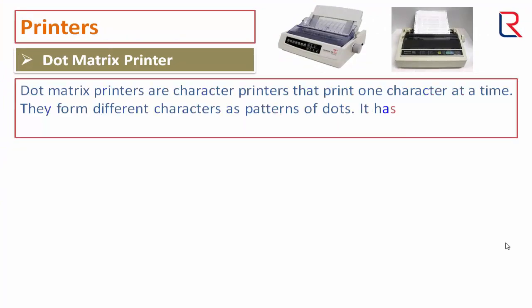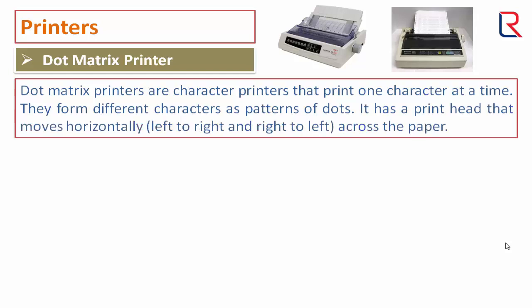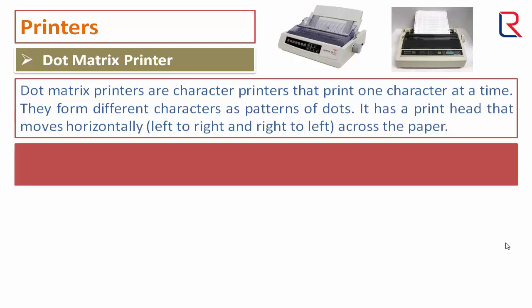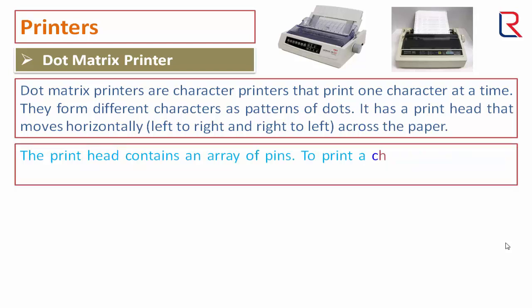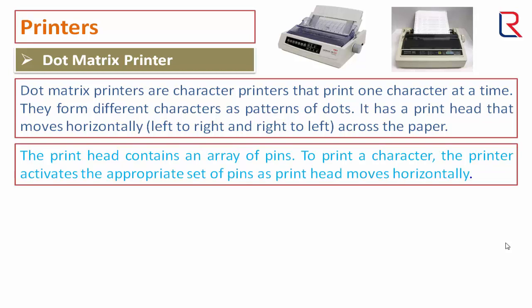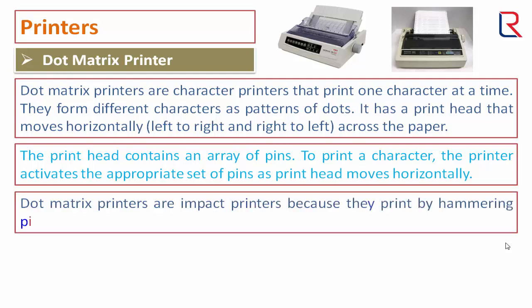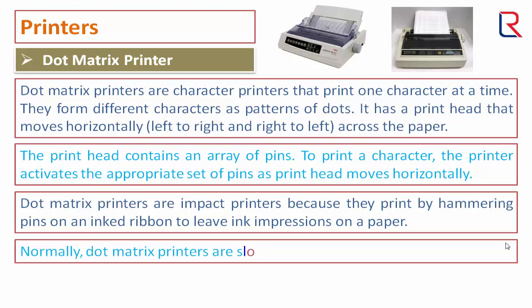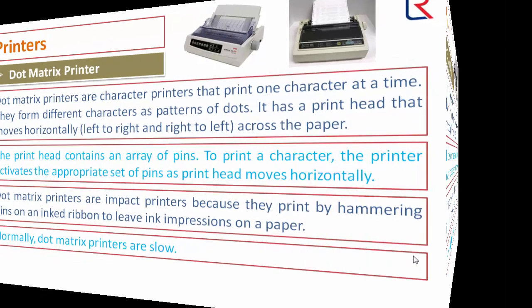Dot matrix printers are character printers that print one character at a time. They form different characters as patterns of dots. The print head moves horizontally across the paper and contains an array of pins. To print a character, the printer activates the appropriate set of pins as the print head moves horizontally. Dot matrix printers are impact printers because they print by hammering pins on an ink ribbon to leave ink impressions on the paper. Normally, dot matrix printers are slow.